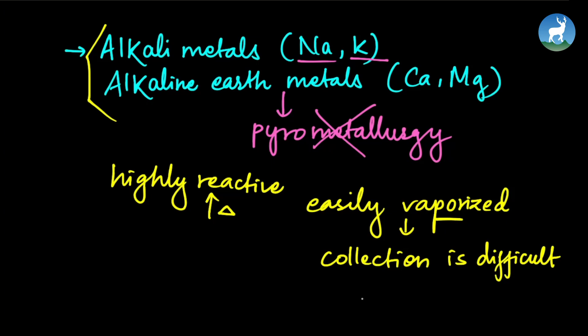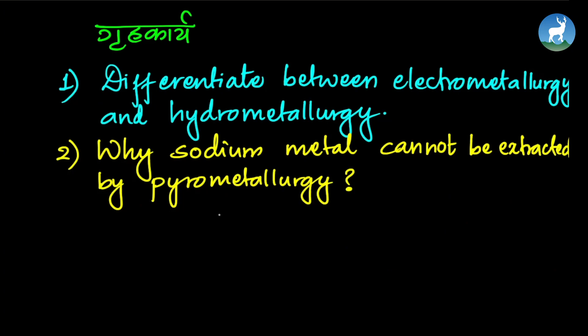We use different types of metallurgy to extract metals depending on the nature of the metal and its impurities. Upcoming topics include: differentiate between electrometallurgy and hydrometallurgy, and why sodium metal cannot be extracted by pyrometallurgy. Visit learningatyourwork.edu.np. Thank you and see you in the next video.